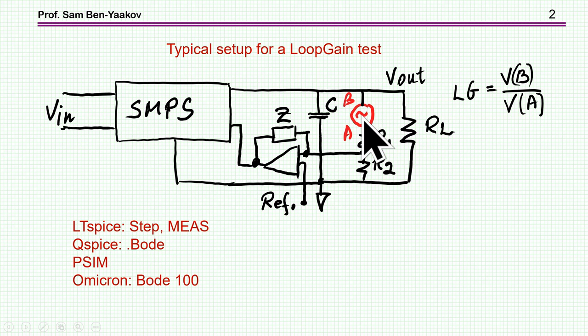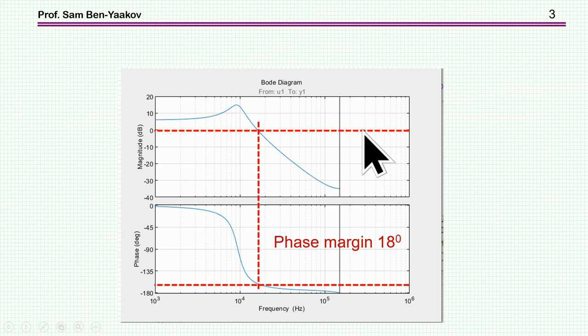What we are after in this examination is, first of all, the frequency at which the loop gain goes down to 0 dB, and then the phase at this point, which is determining the closed loop response in the time domain. If the phase margin is very small, then you have an oscillatory system, not to mention that if it's too small, then it will be unstable. So this is what we are after in this type of testing.